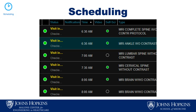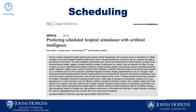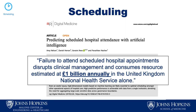Once we decide to image, we need to actually schedule the patient. An MRI schedule has many varying-length time slots — some half an hour, some an hour, some two hours. One patient being late can throw everything off. A use case here is predicting scheduled hospital attendance with AI. A paper published in Nature Digital Medicine used different machine learning algorithms to predict who might be a no-show, helping to schedule patients better. In the United Kingdom's National Health Service alone, failure to attend scheduled hospital appointments costs the healthcare system over a billion pounds annually.